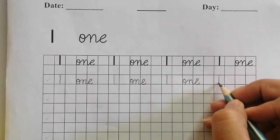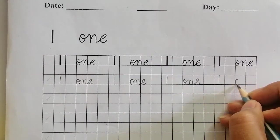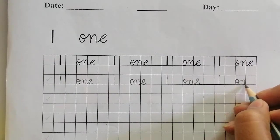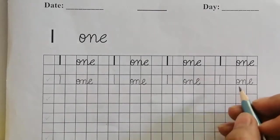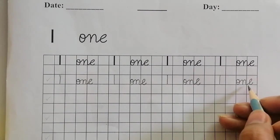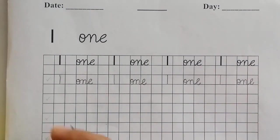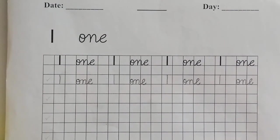Again write करेंगे Numbers में 1. Spelling write करेंगे 1 के: O, N, slant और E write करेंगे. O-N-E, 1. How to spell one? O-N-E, 1. इस portion को आपने बहुत अच्छे से Nursery class complete करना है — नीट writing में — और आपने 1 की spelling को भी learn करना है.